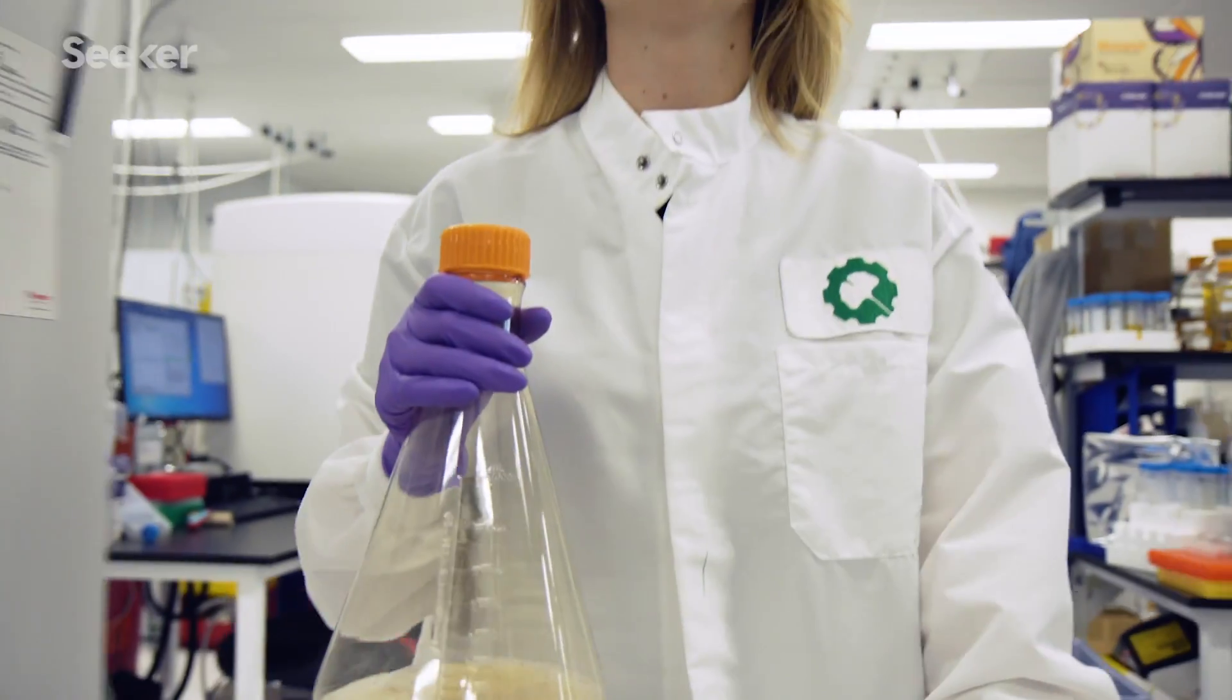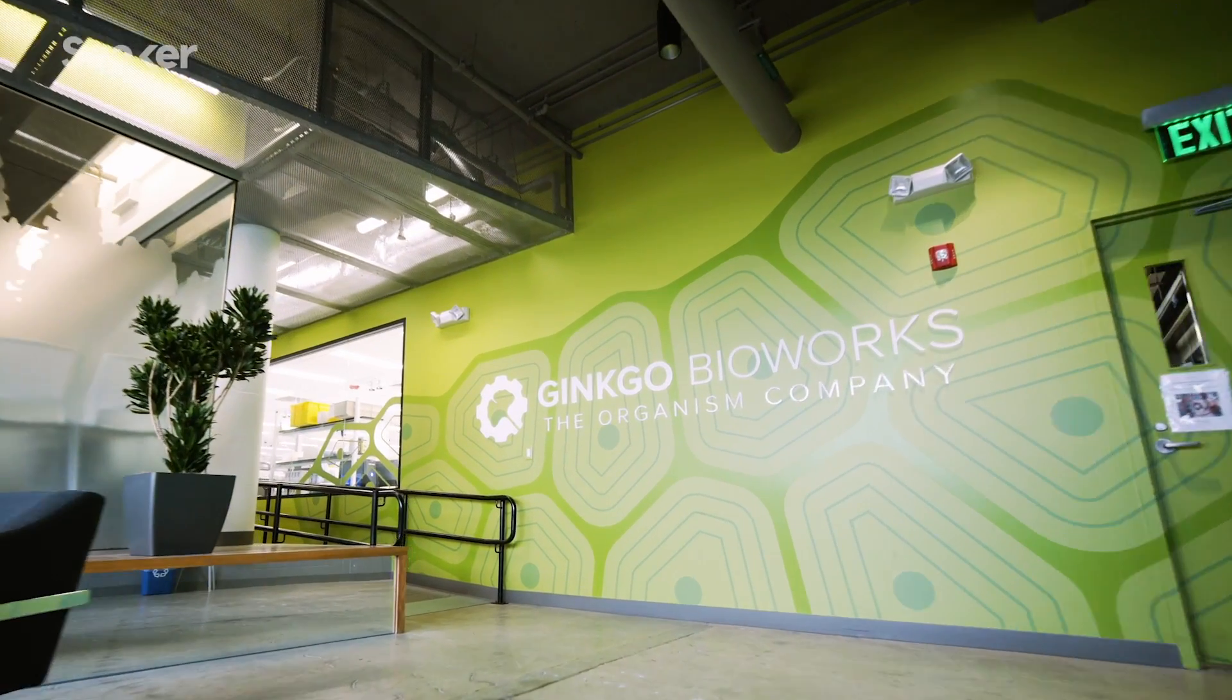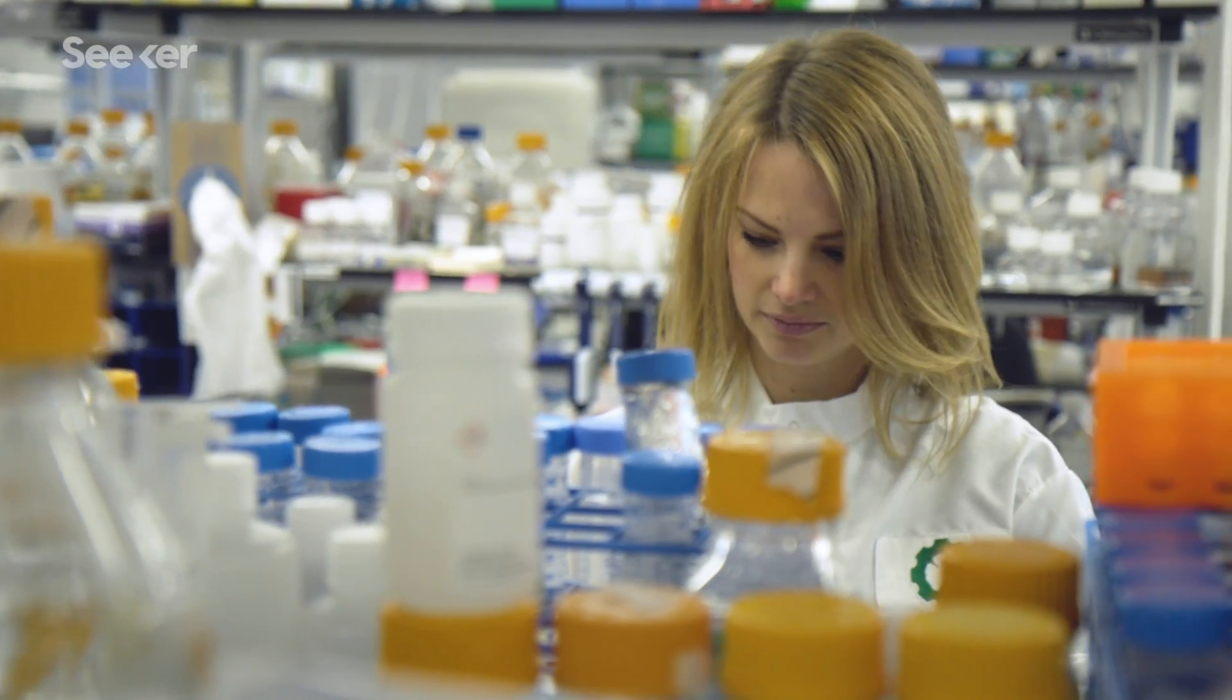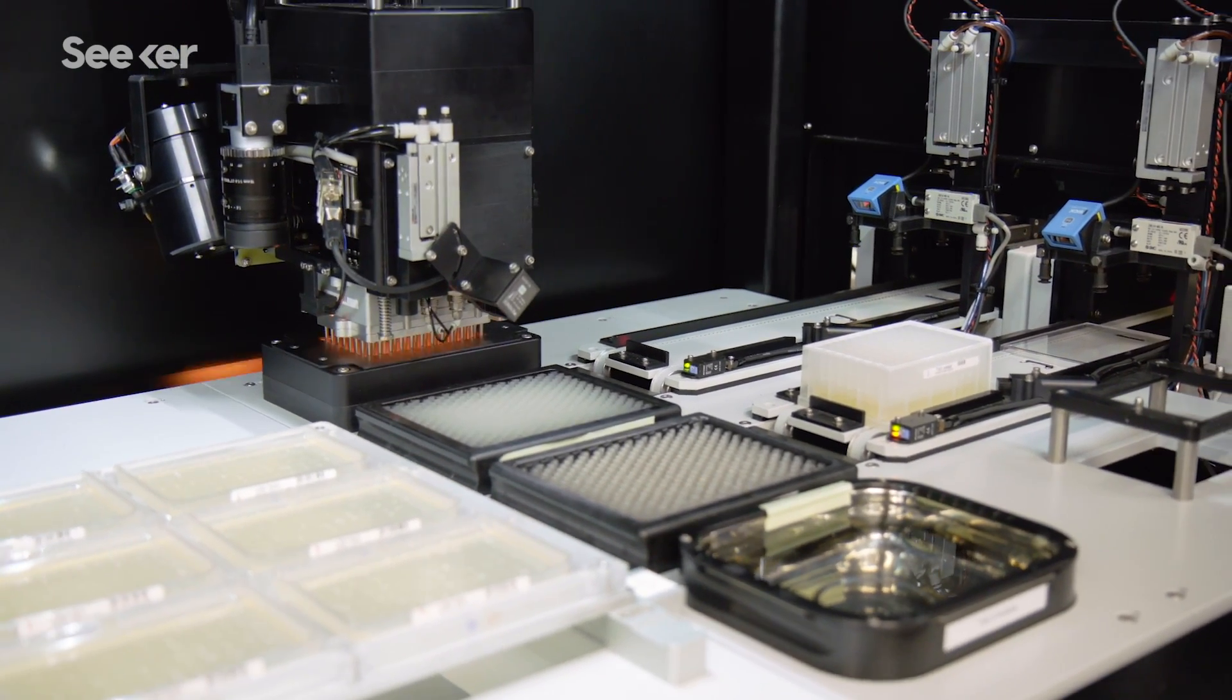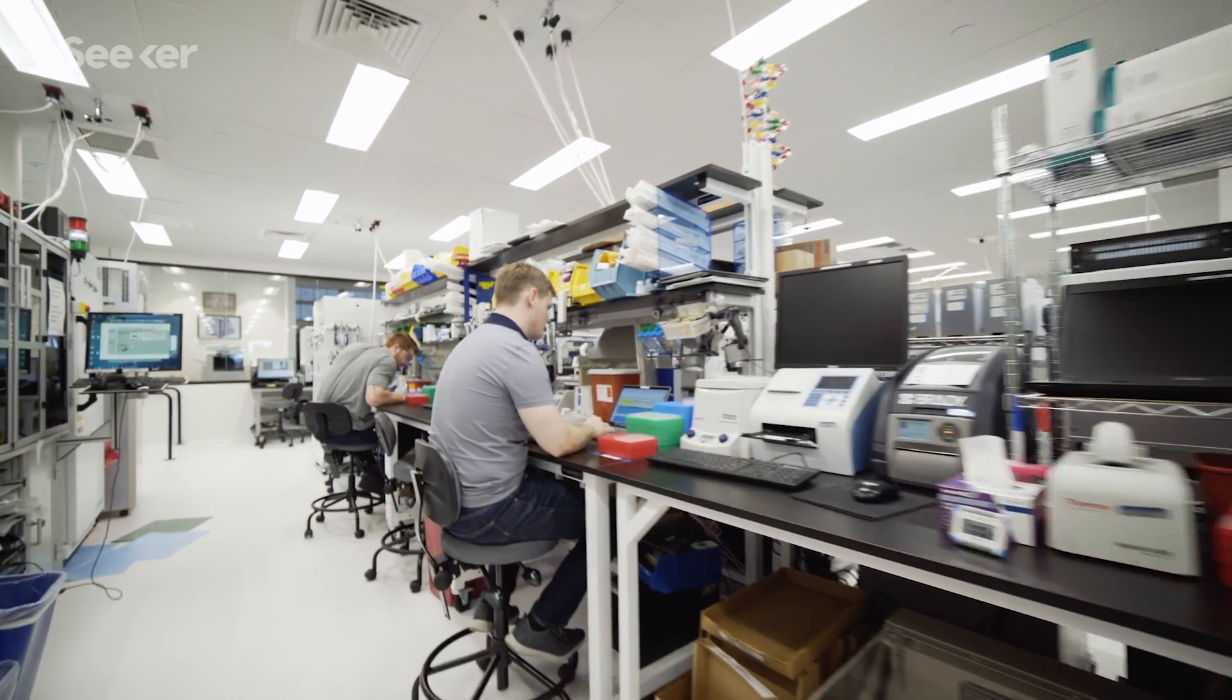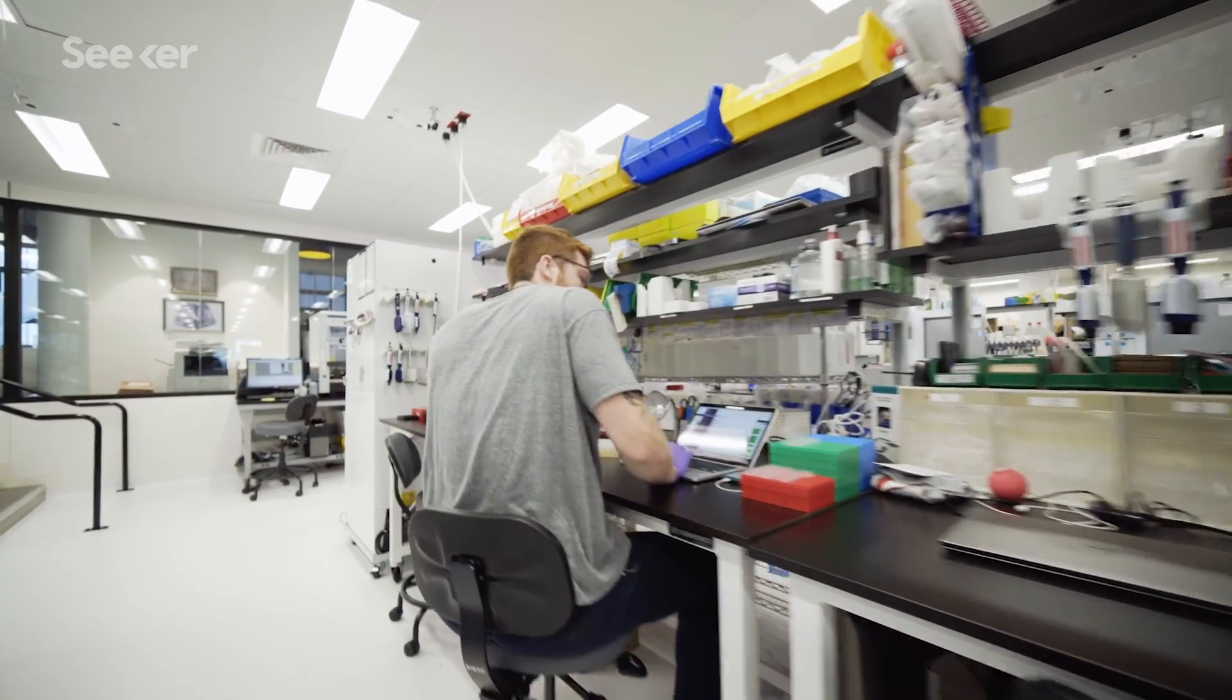Josh and Jade both work at Ginkgo Bioworks, a synthetic biology startup that's kicking this concept into high gear. They have unconventional titles like organism engineer and head of design, and give much of the lab bench work to the robots, freeing up their time for designing and tweaking. It's like taking a tour through the visitor center at Jurassic Park—just swap the dino blood for E. coli.